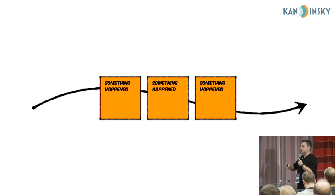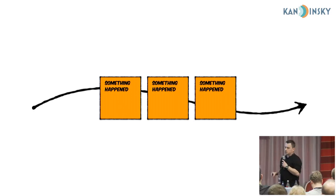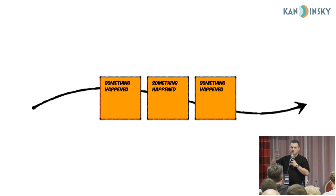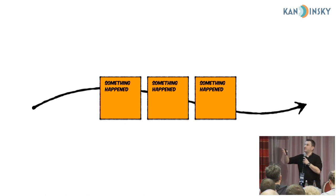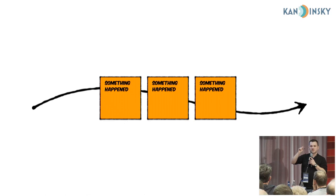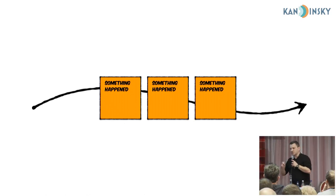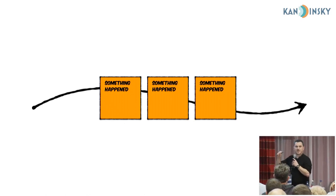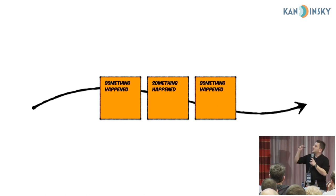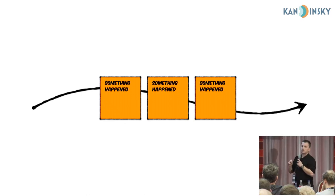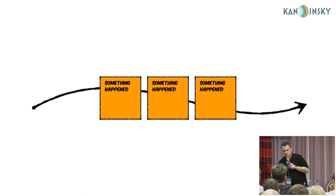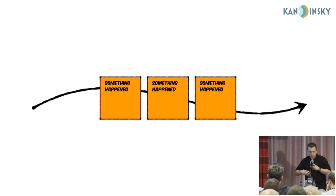In event storming, an event is represented as an orange sticky note, and we can use this concept to present flows and model our stories. A story is composed from a set of events. An event is a particular meaningful moment in time — we can name it, add properties to it. It's very important to someone, and we can use these events to model a flow.